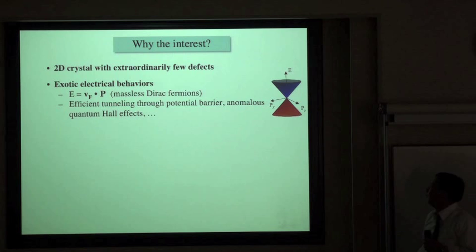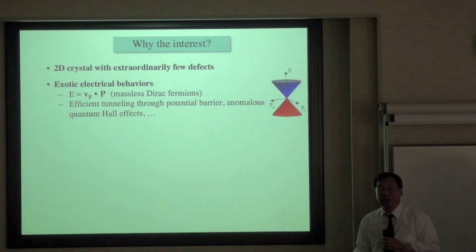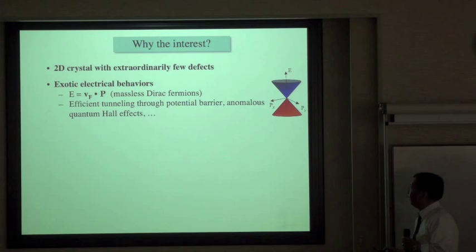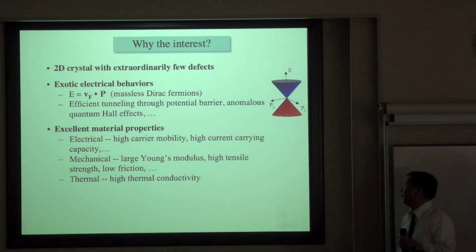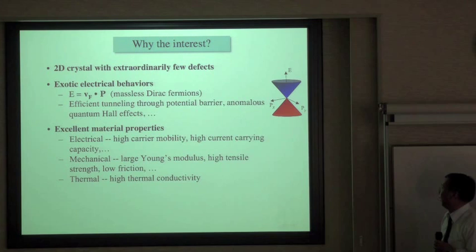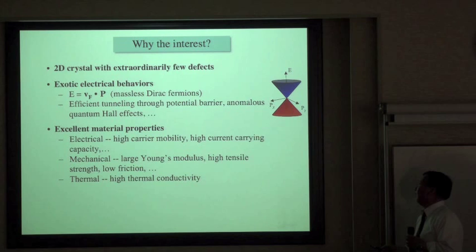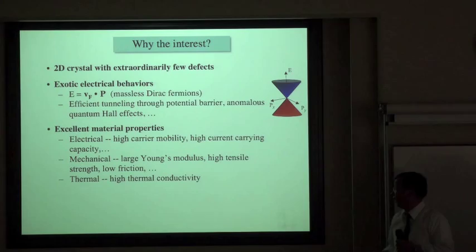Graphene as a material has many excellent properties. Electronically, it has very high carrier mobility at room temperature, higher than any known semiconductors, and high current-carrying capacity. Mechanically, as in the case of carbon nanotubes, graphene has a very large Young's modulus, high tensile strength, and low friction.